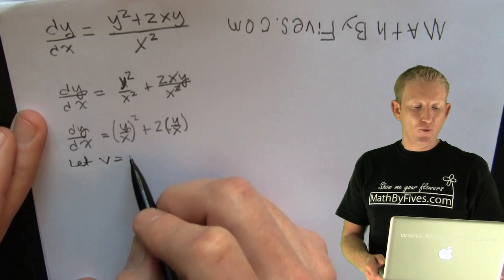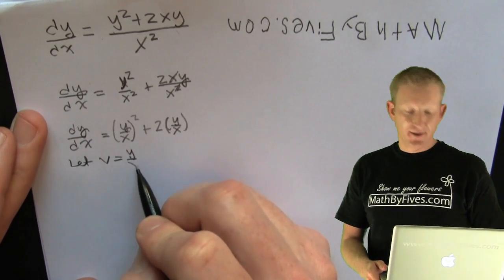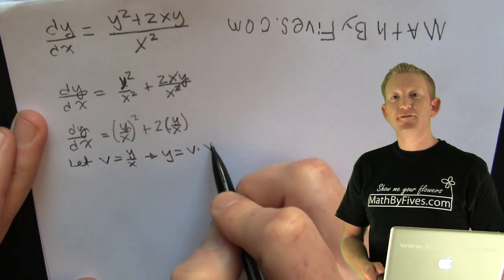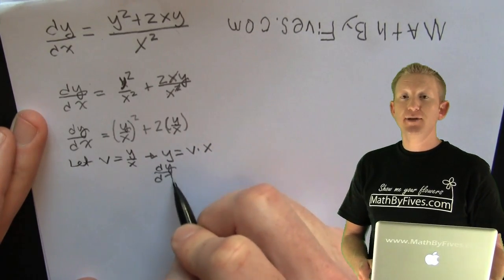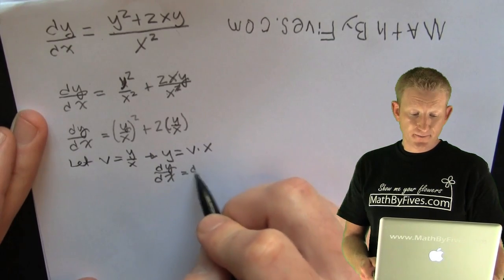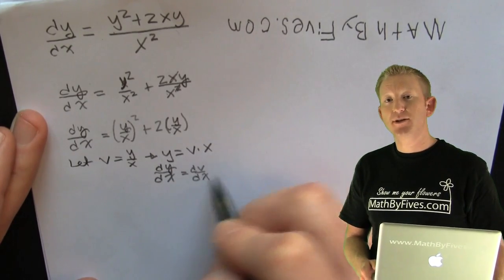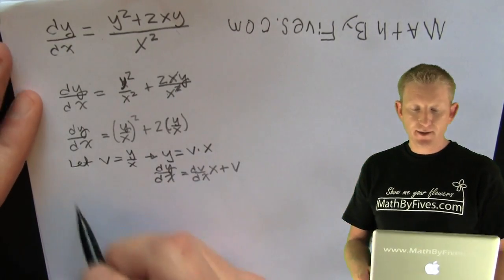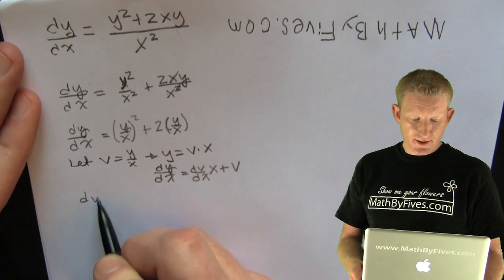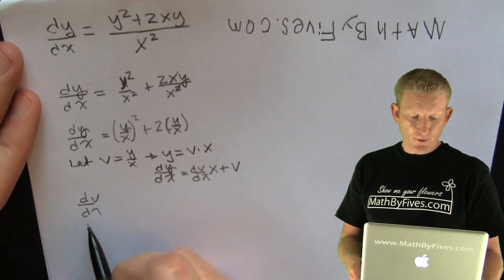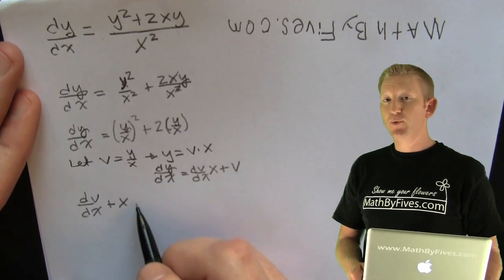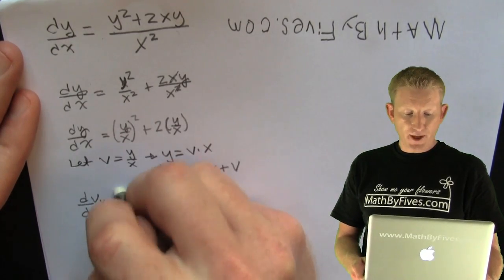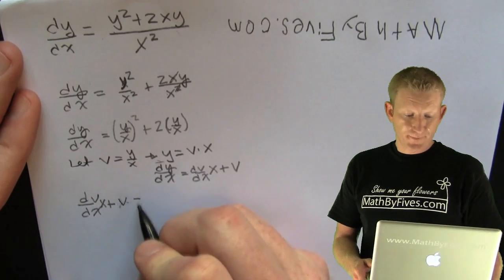He lets v equal y over x. Why does he do that? Because he wants to get the differential out of that too — this guy's tricky. So he gets dy/dx, and then he has to use the product rule on the right-hand side. There he goes — now he makes that substitution, plugging it right on in. He replaced his dy/dx with dv/dx times x plus v.